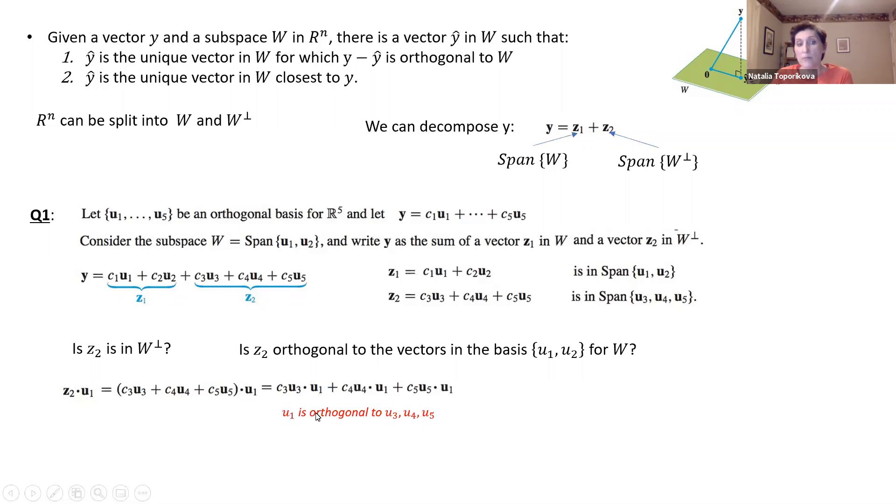And this is important to remember that we are dealing with an orthogonal basis. All our basis vectors from u1 to u5 are orthogonal to each other. So the product u1 with any other basis vector will be equal to zero. So all these terms should be equal to zero. In other words, z2 is orthogonal to u1.